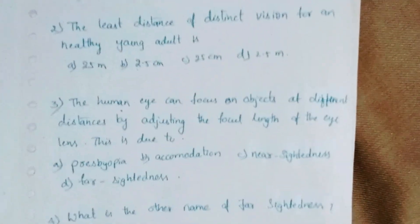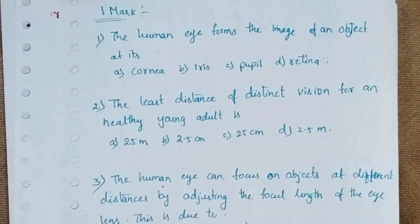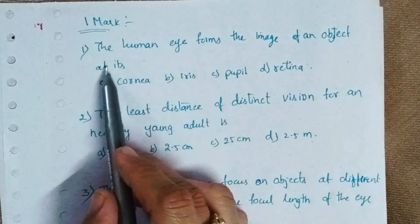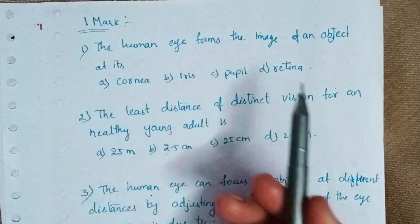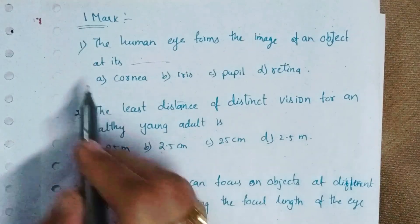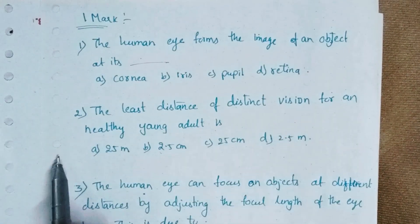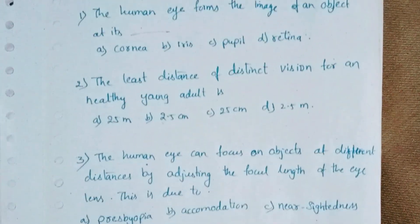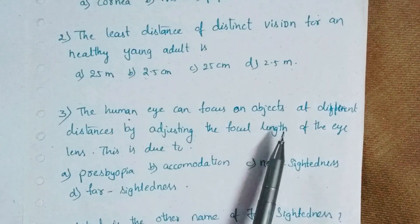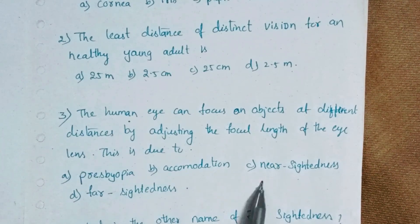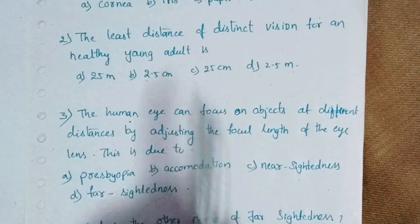One more important question: the human eye forms the image of an object at its dash — this is a choose-the-correct-answer type. Options are: cornea, pupil, retina. Next: the least distance of distinct vision for a healthy young adult is — four options are given, write it down. Next: the human eye can focus on objects at different distances by adjusting the focal length of the eye lens — this is due to which option? These are the choose-the-correct-answer type questions.